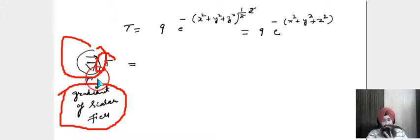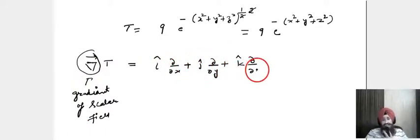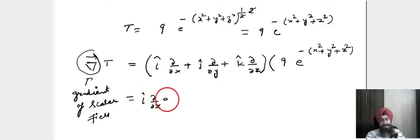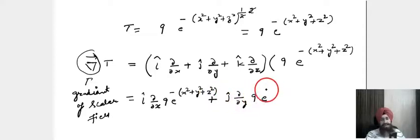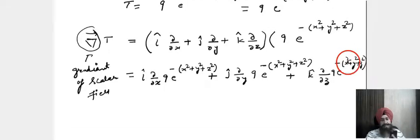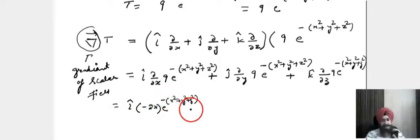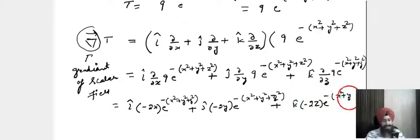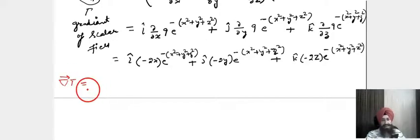The Del operator splits into partial derivatives: curly by curly X, curly by curly Y, and curly by curly Z. Differentiating, the partial derivative of minus x squared becomes minus 2x, keeping in mind the factor of 9 which is in multiplication with each term.